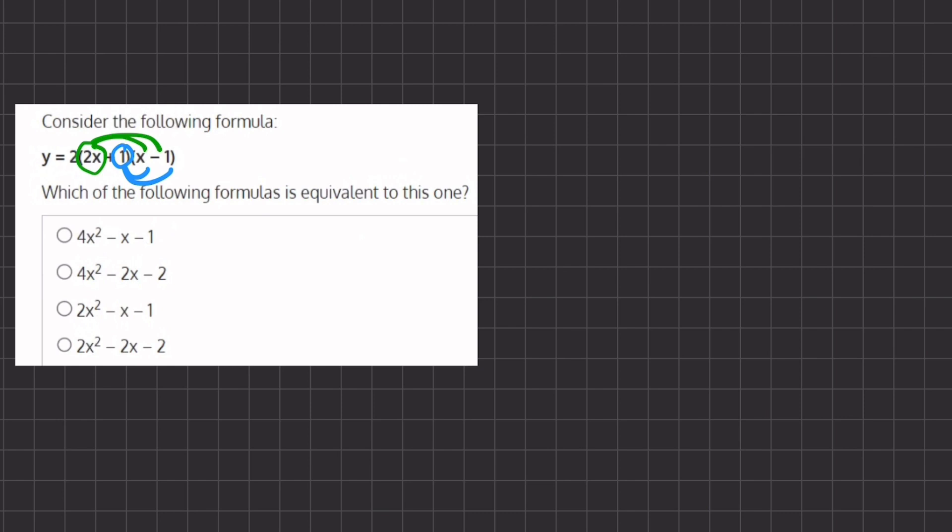Let's begin with our first step. We have 2x times x. First, let's write our equation y equals 2 and we'll leave that aside and now we'll open our brackets and start our FOIL method.